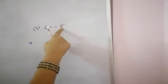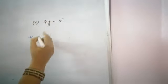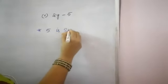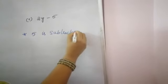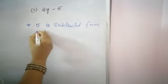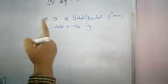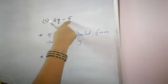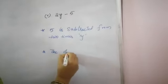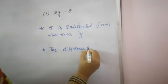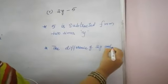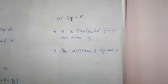For the expression 2Y minus 5, first statement: 5 is subtracted from 2 times of Y, or twice of Y. One more statement — the fundamental operation is subtraction — the difference of 2Y and 5.